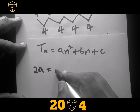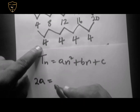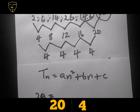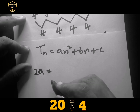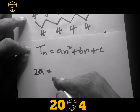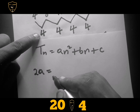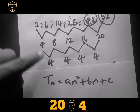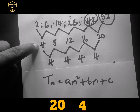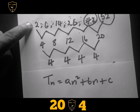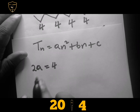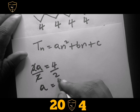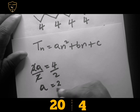We say 2a equals the constant difference. Now we are having four here — I want to emphasize: we are using the constant difference, which is four from the third row. So 2a equals 4. You solve for a by dividing both sides by 2: 4 divided by 2 gives us a equals 2.